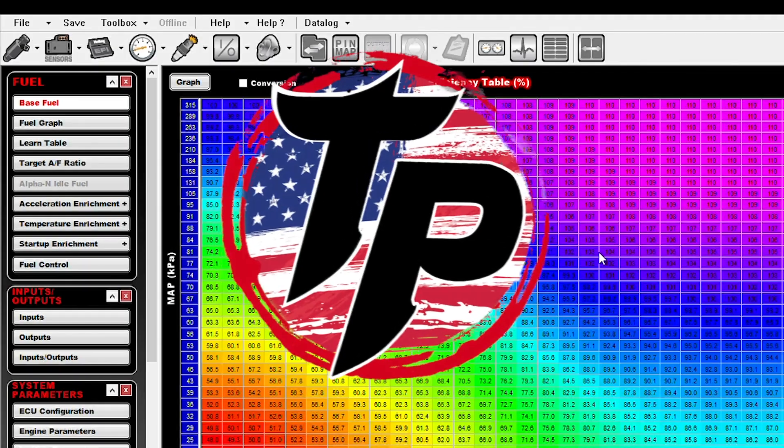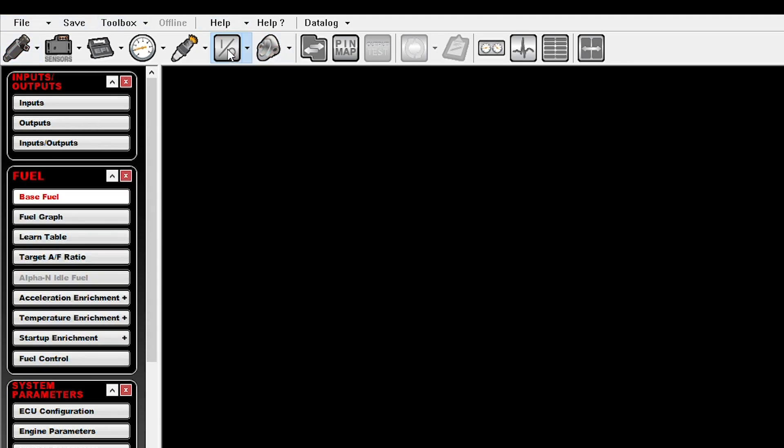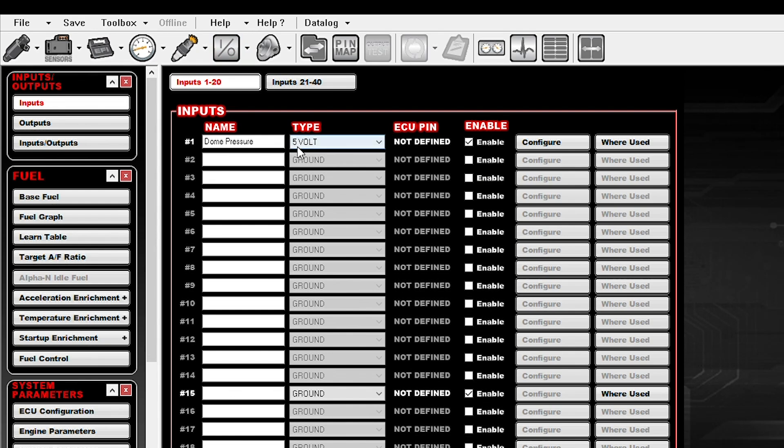All right. So we're just going to go over briefly how to set up the speed sensor using a terminator X system. The first thing you're going to do is go into your tuning software and you're going to load your base file. In this case, this is just a simple base file for one of Holley's base maps for a turbo LS XL. We're going to go in here to our input and output folder and you can see one of the inputs is already being used for boost pressure and that's fine.